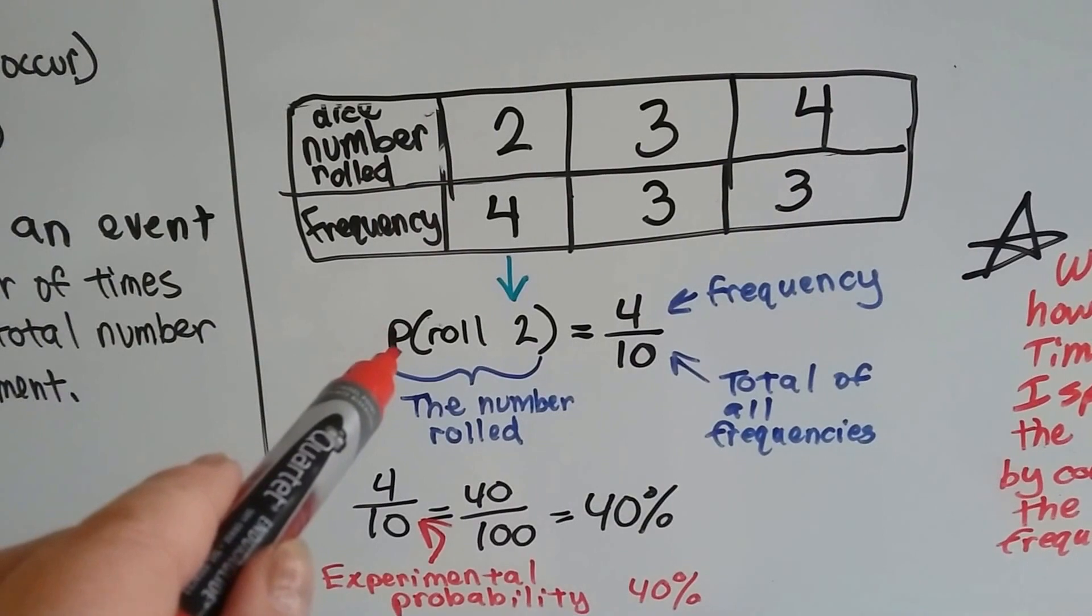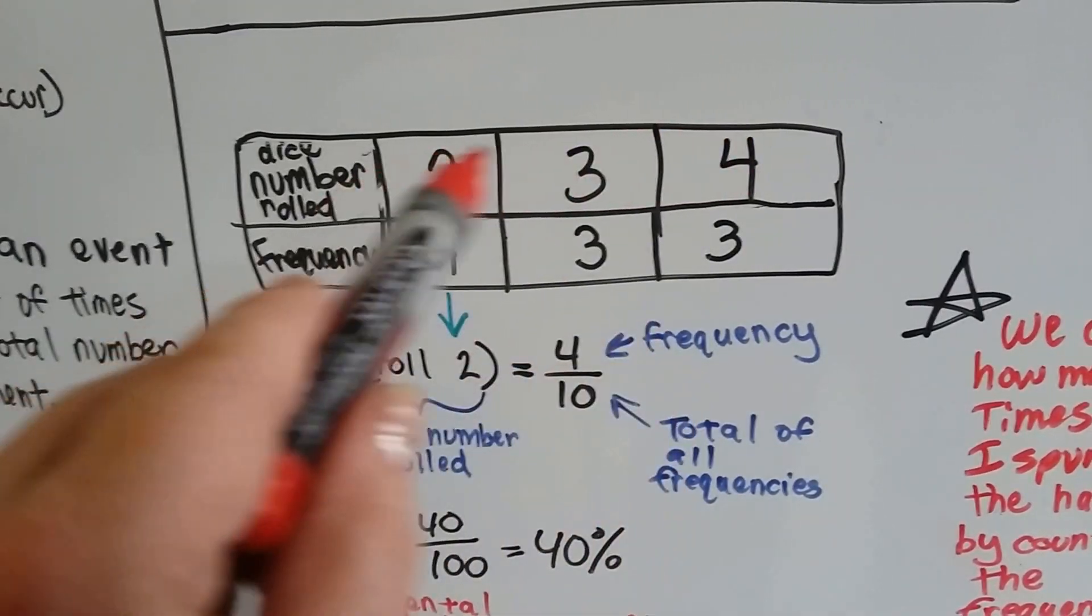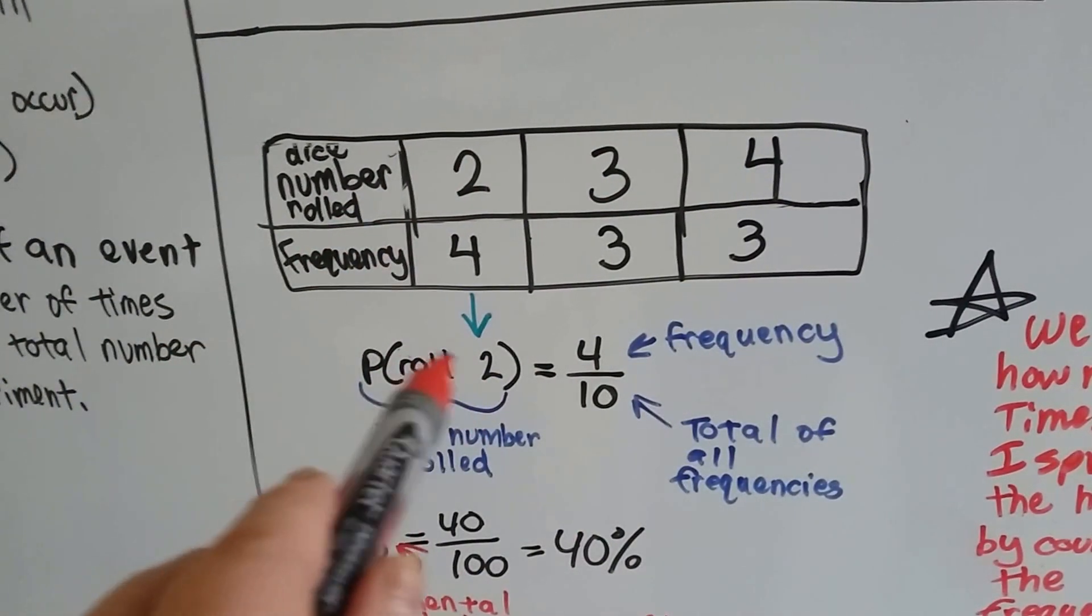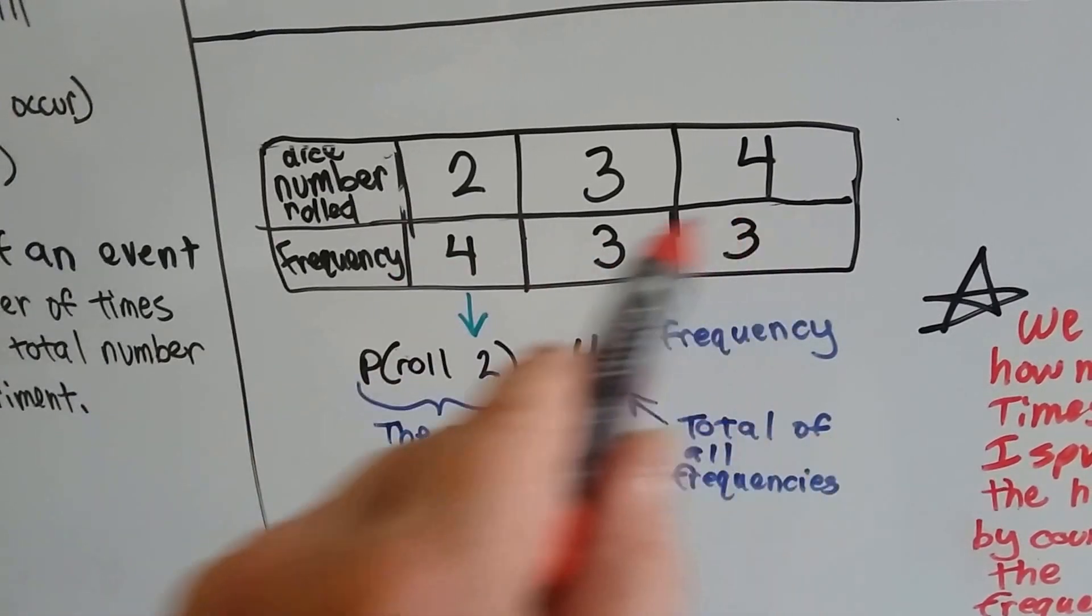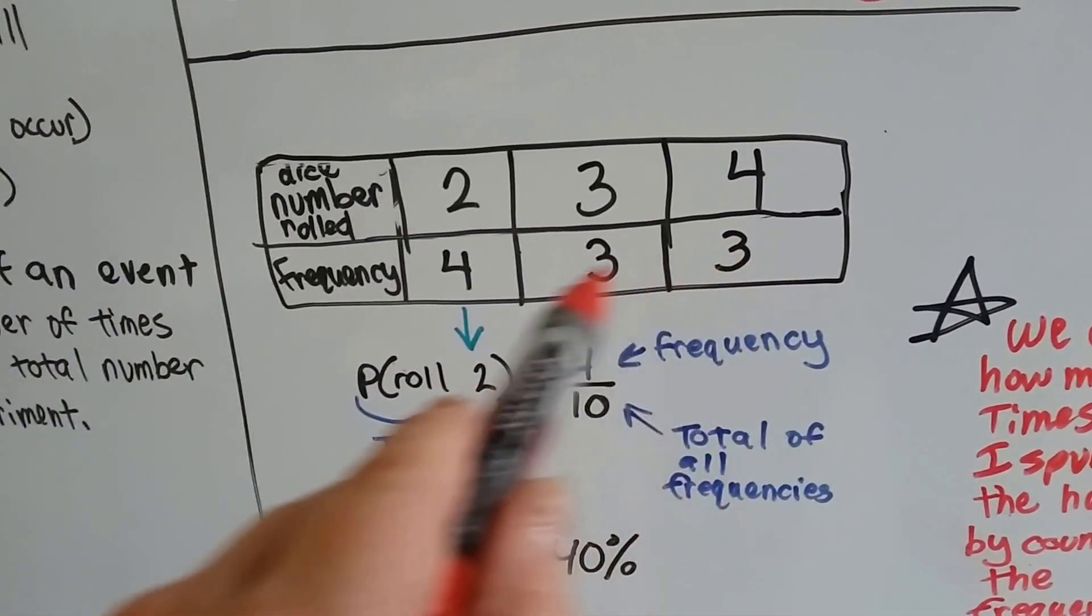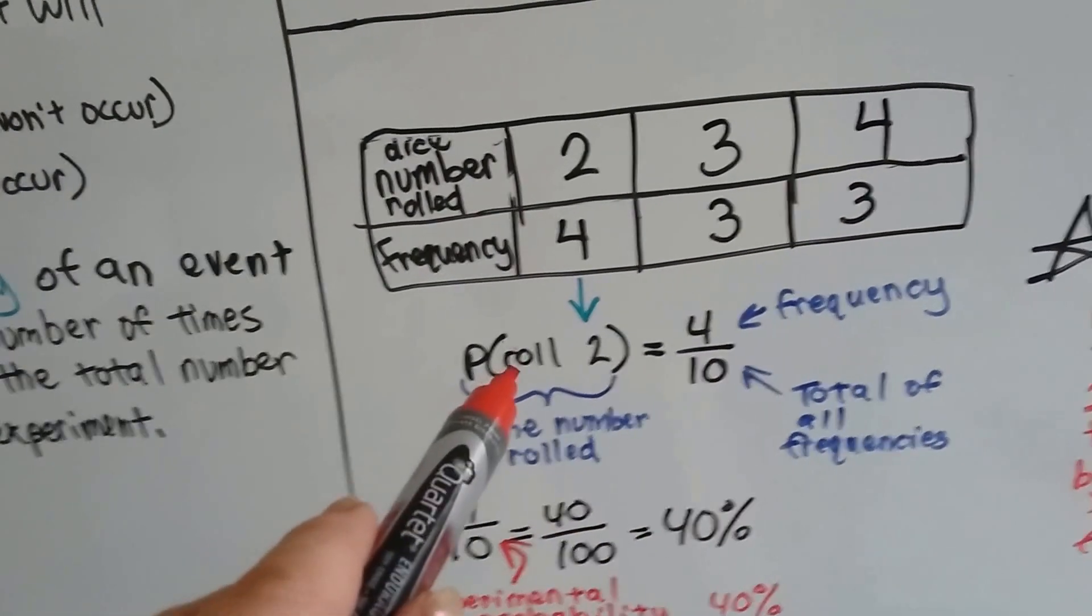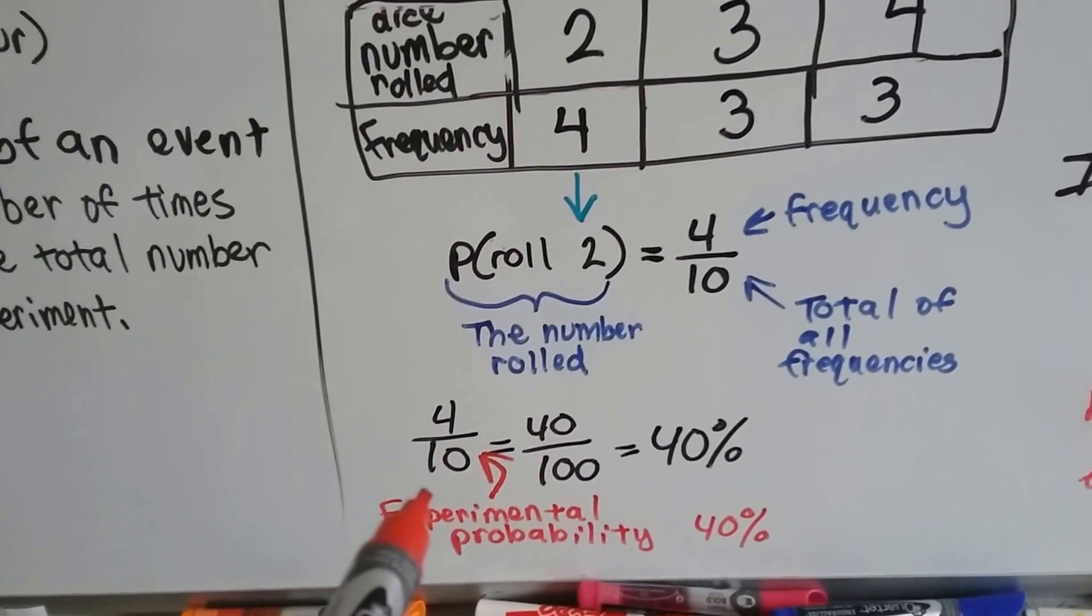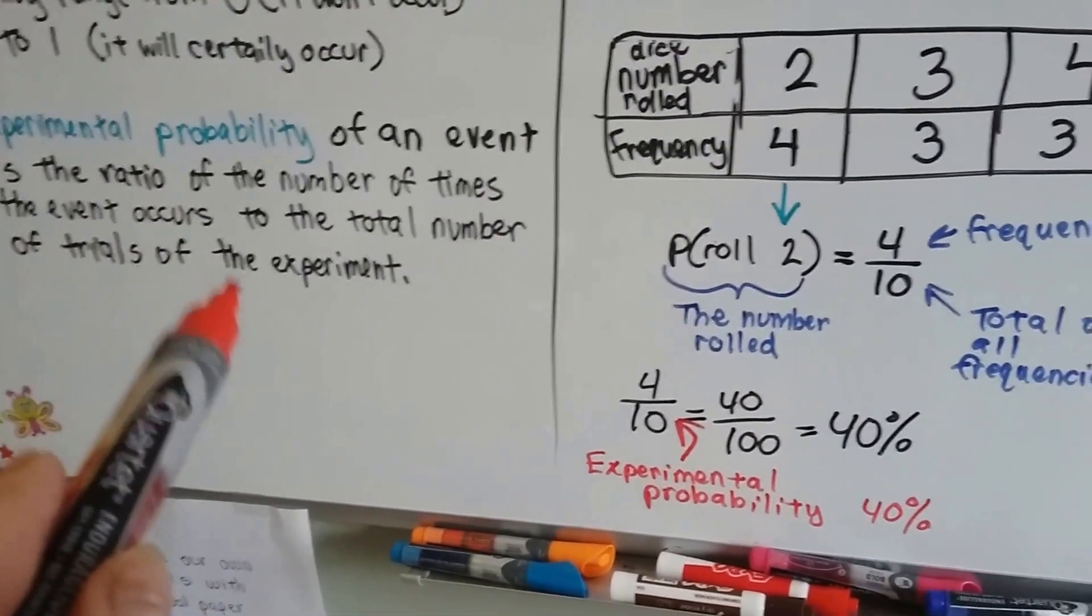So, it would be written like P, and I rolled a two, and this number on the top has nothing to do with the fraction. The only thing that it has to do with the fraction is that it's the part right here. The numerator and denominator is the frequency over the total number of the frequencies. This is a four, because it happened four times, out of four, five, six, seven, eight, nine, ten. Four plus three plus three is ten. You total up all the frequencies. And that's the number that's the denominator. That's the number that's rolled, or the color that was on the wheel, or whatever.